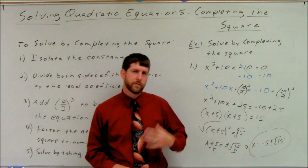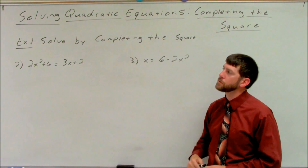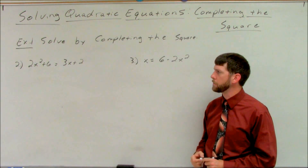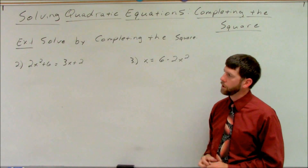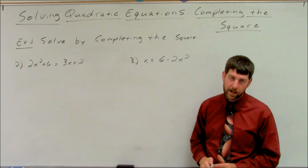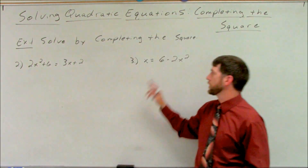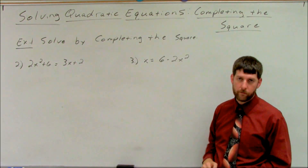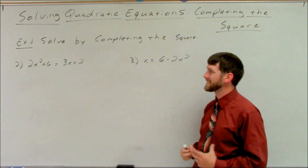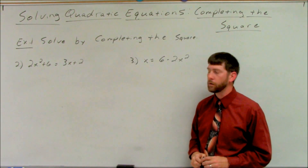Here we have two examples. Pause the video for a few moments and try to work each of these out by yourself, solving by completing the square. Quickly notice: there's an actual number in front of those x squareds, so you'll have to do that second step — dividing by the lead coefficient. Try it out, see how you do, and I'll wait right here.